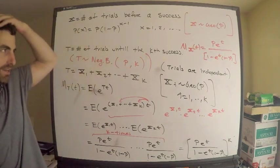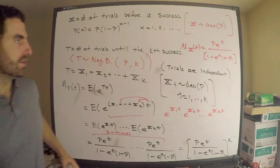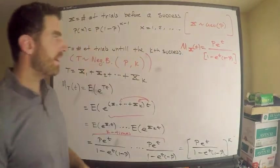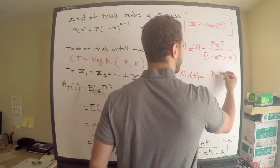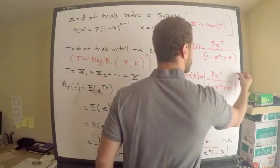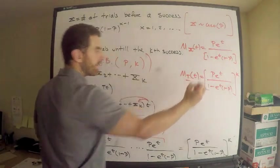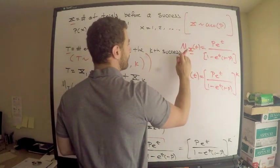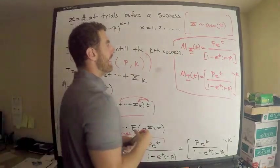There is the moment generating function for the negative binomial distribution — that's what I wanted. Let me write it down to make sure everything is crystal clear. To record my two results: I have the MGF of the geometric random variable, and I also now have the MGF of the negative binomial random variable — which is p times e to the t, divided by 1 minus e to the t times 1 minus p, all raised to the k.